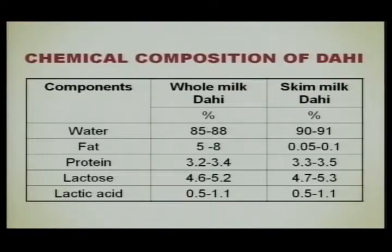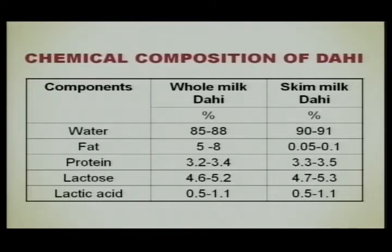The chemical composition of whole milk dahi is approximately: water 85 to 88 percent, fat 5 to 8 percent, protein 3.2 to 3.4 percent, lactose 4.6 to 5.2 percent, and lactic acid 0.5 to 1.1 percent. Around 10 to 15 percent of the lactose present in milk is converted into lactic acid. For skim milk dahi, fat is minimum 0.05 to 0.1 percent, protein 3.3 to 3.5 percent, lactose 4.7 to 5.3 percent, and lactic acid 0.5 to 1.5 percent.